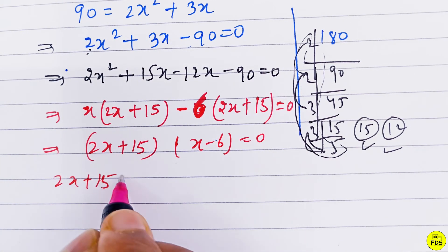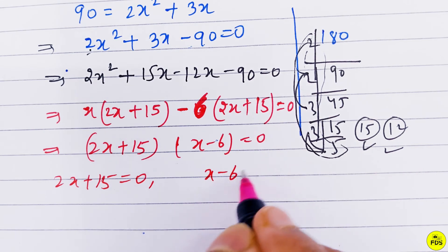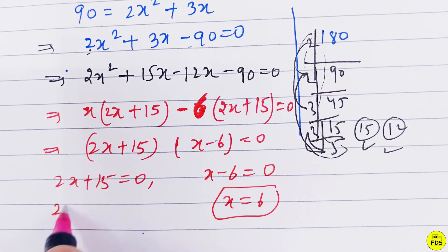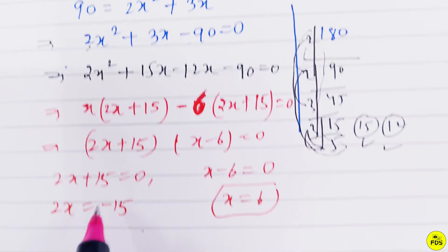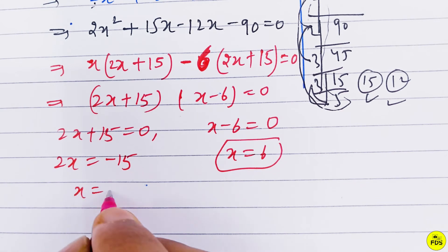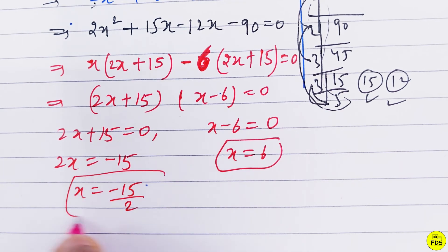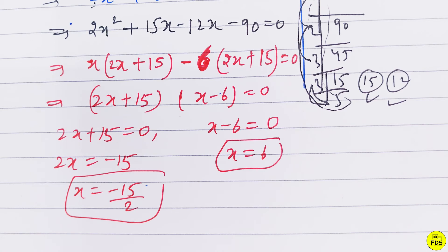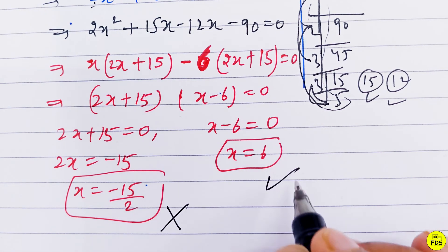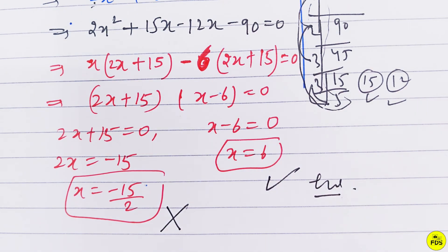So, (2x + 15) = 0 gives x = -15/2, and (x - 6) = 0 gives x = 6. Since the number of articles must be a positive integer, we reject the negative value.